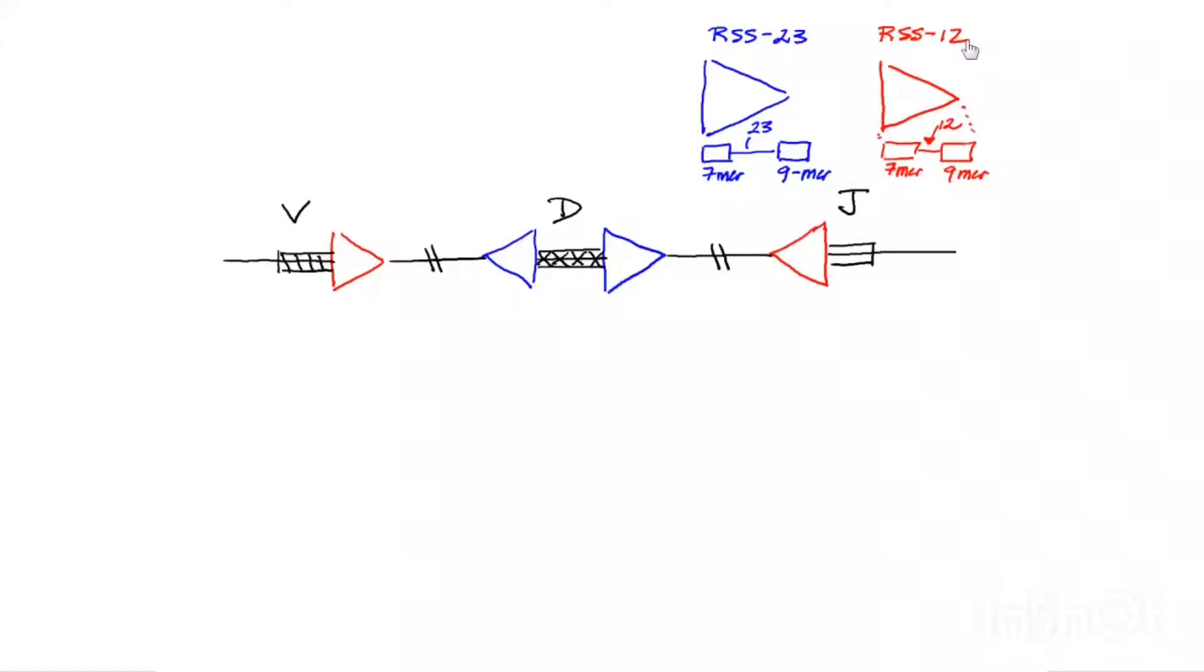And VDJ recombination always occurs between a RSS 23 and an RSS 12. So that's the 12-23 rule.